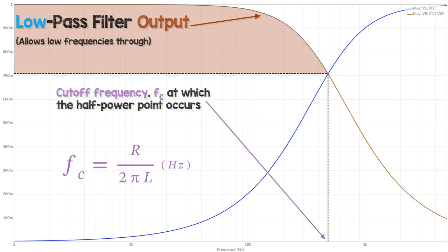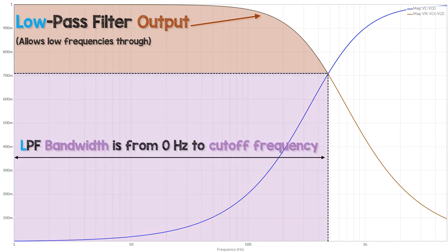The cutoff frequency fc occurs at the half power point and for an RL filter the cutoff frequency equals R over 2πL, whether a low pass or a high pass filter. The bandwidth is from 0 Hz to the cutoff or corner frequency with a low pass filter.